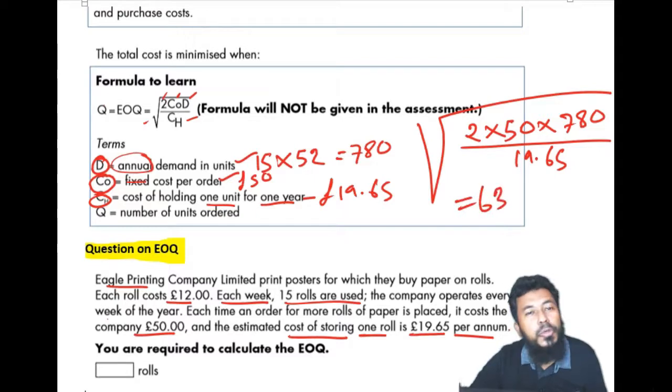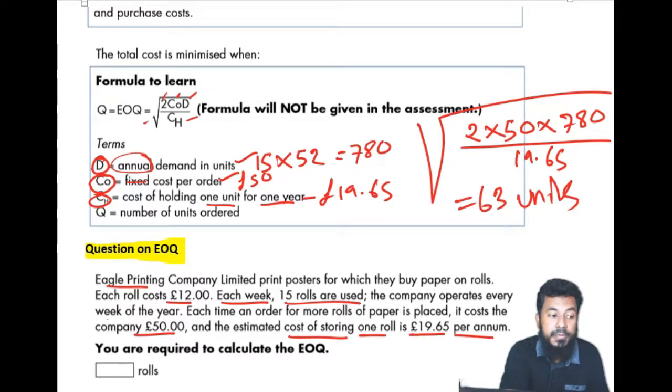63 rolls or units are your correct answer. Hope it helps, guys.